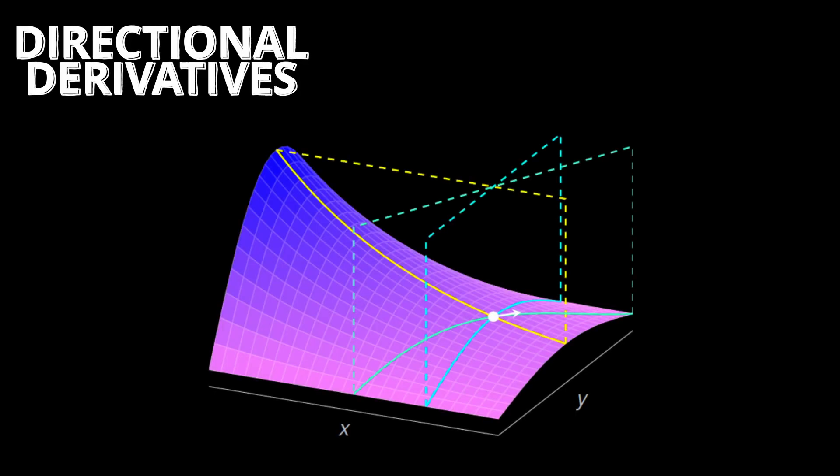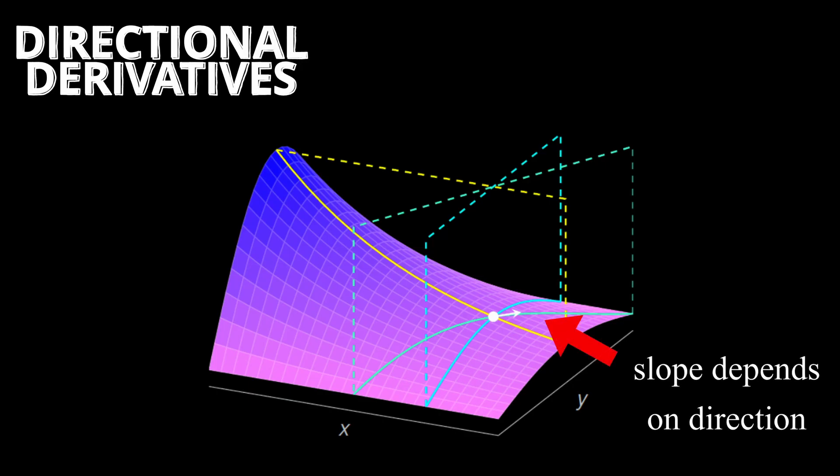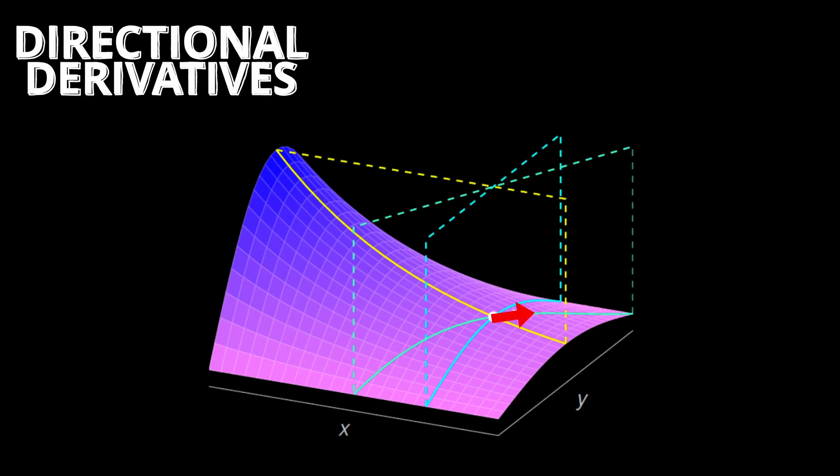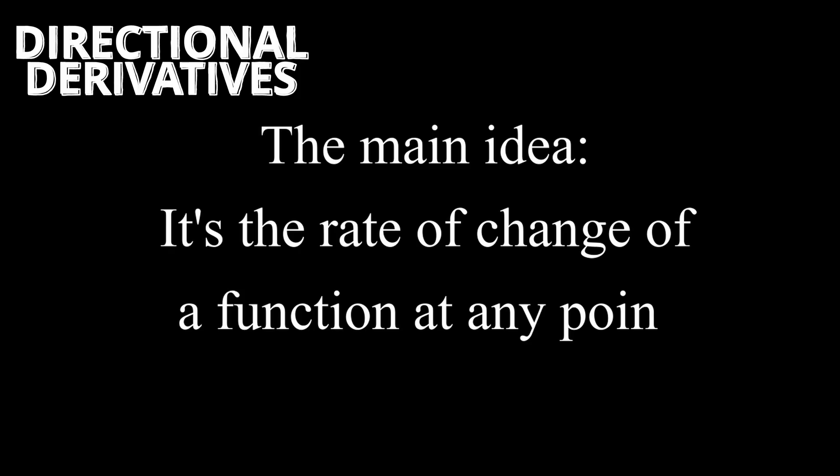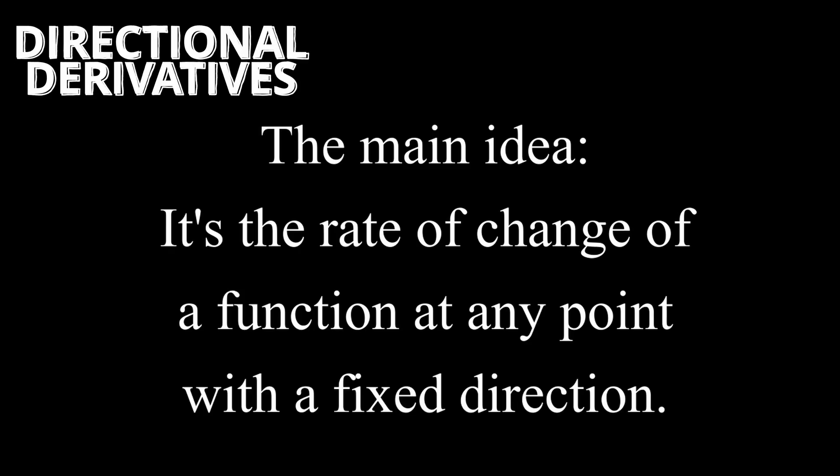Directional derivatives. Since we work with 3D surfaces in multivariable calculus, it's safe to say that the slope of the function at any certain point depends on its direction. For example, if we go in this direction, the slope is negative, whereas going in this direction, the slope is positive. All at the same point. This encapsulates the idea of directional derivatives.